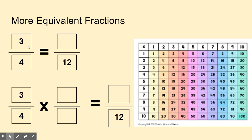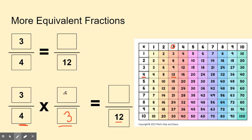A couple of practice problems now. We need to determine what would go in the numerator for three-fourths equals blank over twelve. To solve this, we need to figure out what number we're going to multiply by four to get twelve. If we find our four in our multiplication chart, four times what number is equal to twelve? Four times three is equal to twelve.